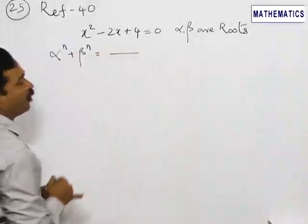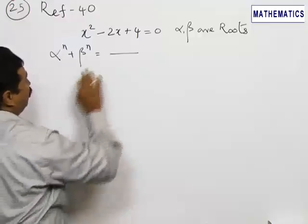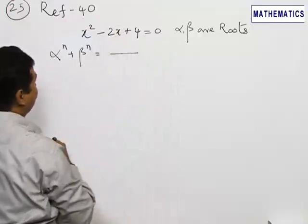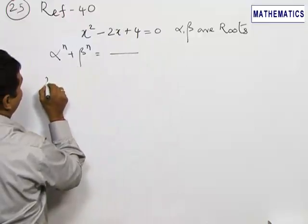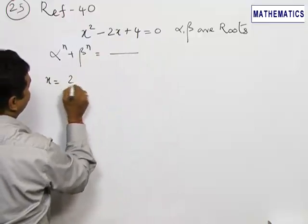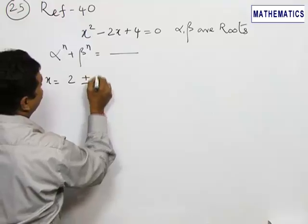We have to find the value of α^n plus β^n. To find the roots, just try to solve this equation as x equals minus b, that is 2, plus or minus root of b² - 4ac.